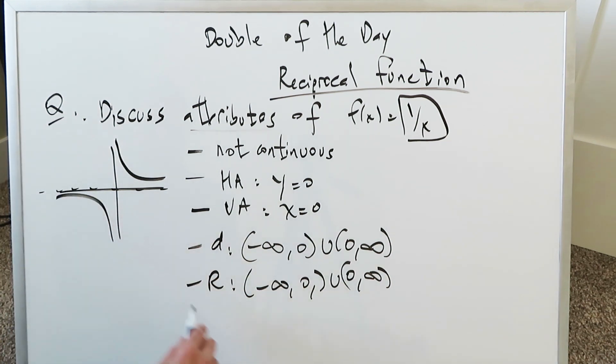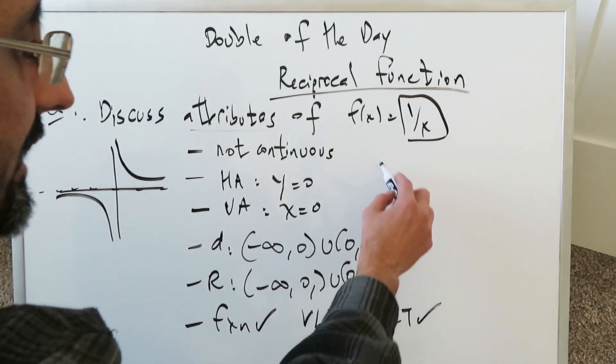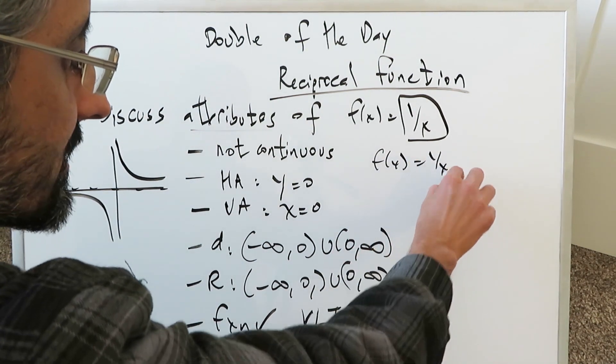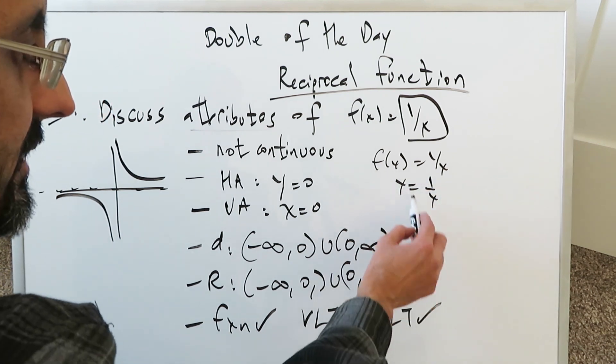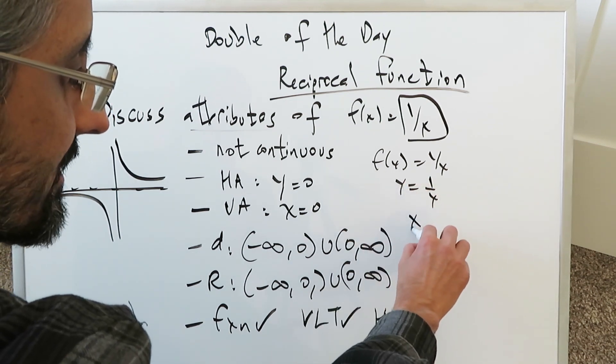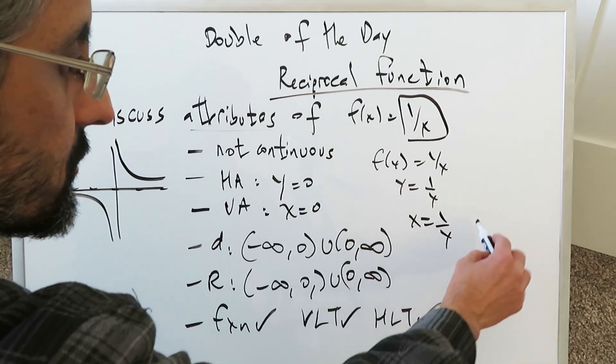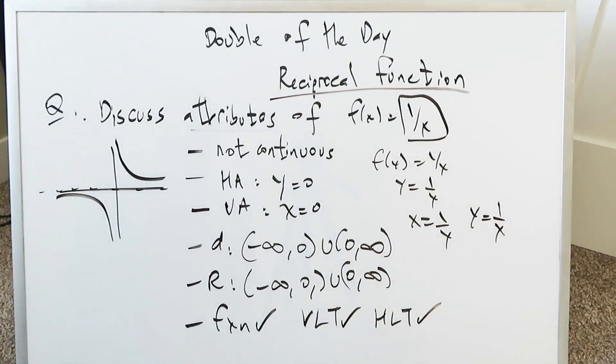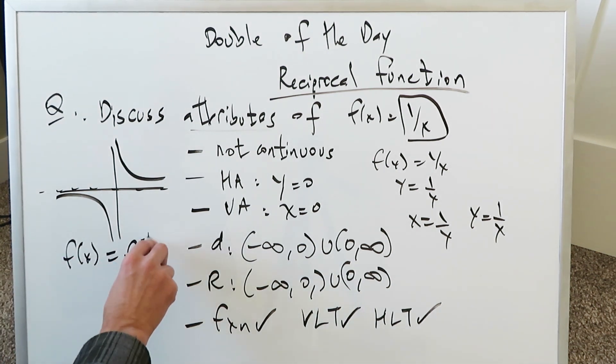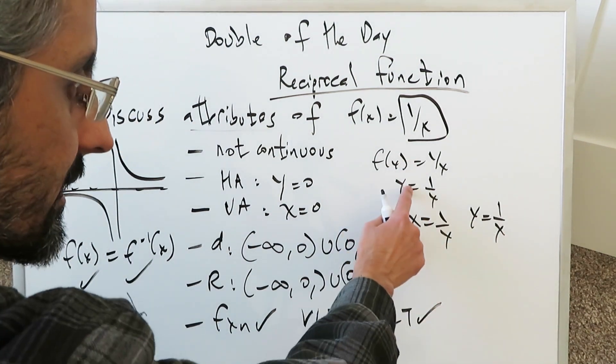This right here is actually a true function. It will easily pass the vertical line test and it will pass the horizontal line test. So therefore, this function can easily have an inverse. What would be the inverse if f(x) is equal to 1 over x? To demonstrate the inverse, you just switch the variables around. x equals 1 over y, and then you would solve for the new y and y would still equal 1 over x. So for this specific function, the function and its inverse are equal. This is a rare instance where you have a function and its inverse which are exactly the same.